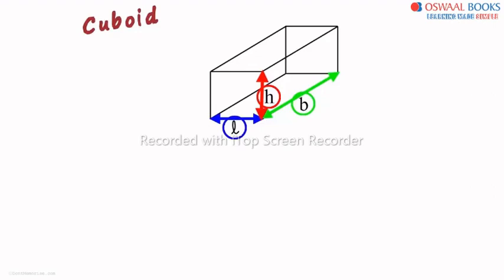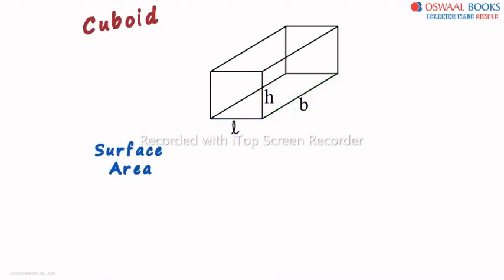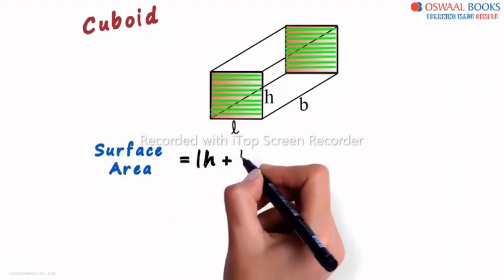We now need to understand how its surface area is calculated. Its surface area will be the sum of the areas of the six rectangles. We look at each rectangle closely. The area of the rectangle we see in the front will be L multiplied by H and the area of the rectangle at the back will also be L multiplied by H. So the sum of these two will be LH plus LH.